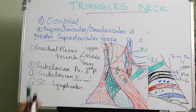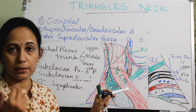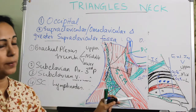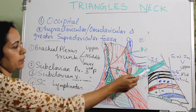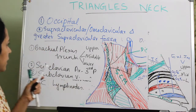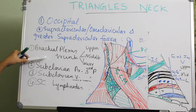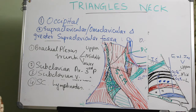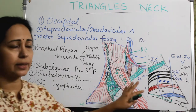In summary, the supraclavicular or omoclavicular triangle is the lower part of the posterior triangle, bounded anteriorly by the posterior border of sternocleidomastoid, posteriorly by trapezius, above by the inferior belly of omohyoid, and below by the middle third of clavicle. It contains mainly the upper, middle, and lower trunks of the brachial plexus, the third part of the subclavian artery, the subclavian vein, and the supraclavicular lymph nodes.